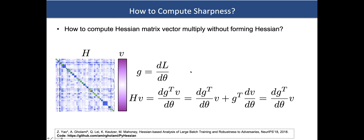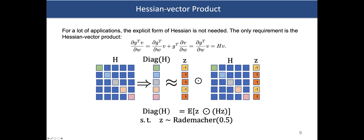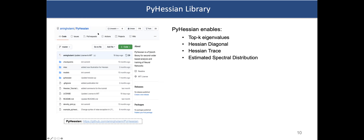In summary: draw a random vector (Rademacher or Gaussian), backpropagate to compute Hv, then take the dot product to get the trace or diagonal. The PyHessian library implements this, available online under the MIT license for industry use. It supports top eigenvalue computation, Hessian diagonal, trace, and full spectral density (complete eigenvalue distribution).